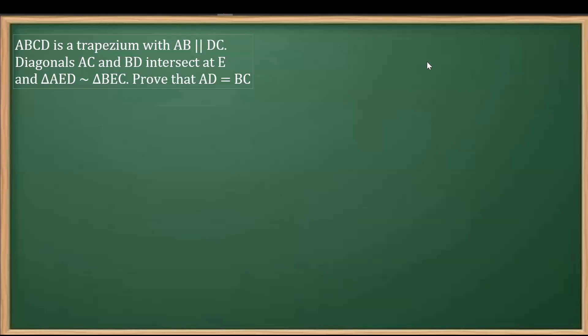In this question from the chapter on similar triangles, ABCD is a trapezium with AB parallel to DC and the diagonals AC and BD intersect at E. Let's begin by making a trapezium. A trapezium is a quadrilateral where one pair of opposite sides are parallel.